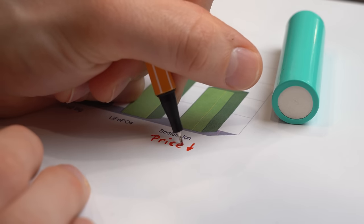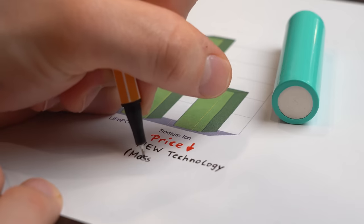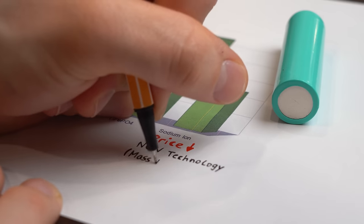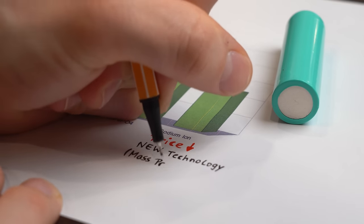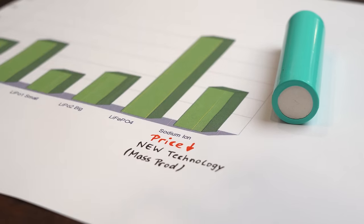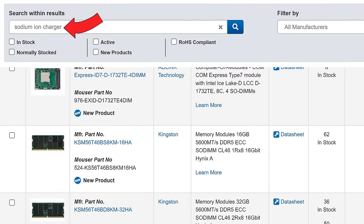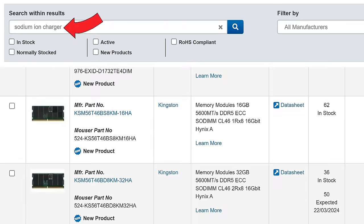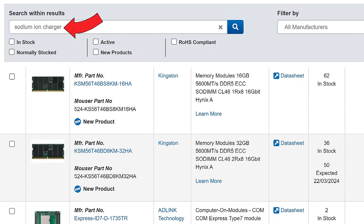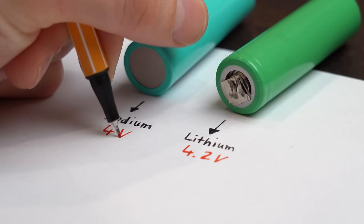But I bet that will soon change due to the low price of the material and it is currently probably only so high because it is a new technology that is not quite in mass production yet. And speaking of new technology there also do not exist dedicated charging ICs for sodium ion batteries yet which are definitely mandatory though because of the different charging voltage.